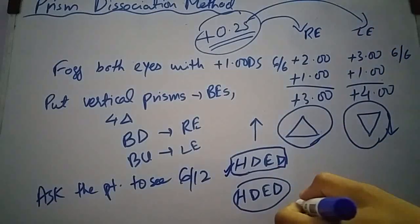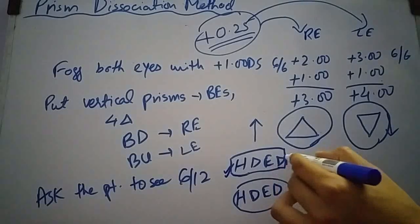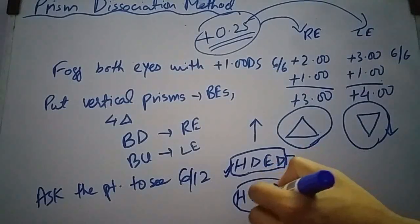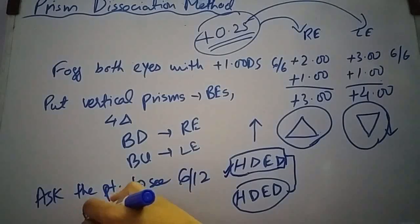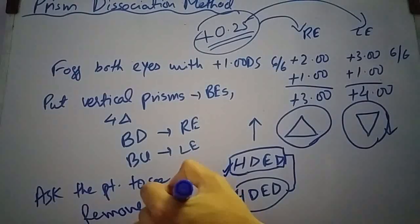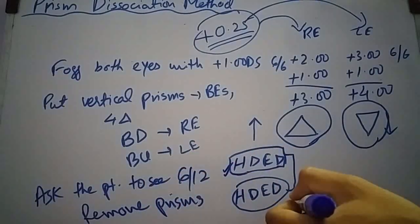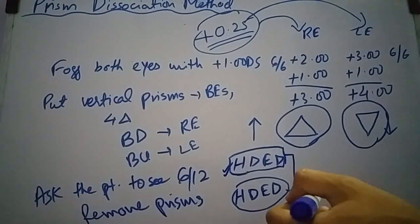Repeat the procedure and you will continue to do that until the patient says that both lines are equally clear. Then remove the prisms and defog both eyes binocularly until best vision is achieved.